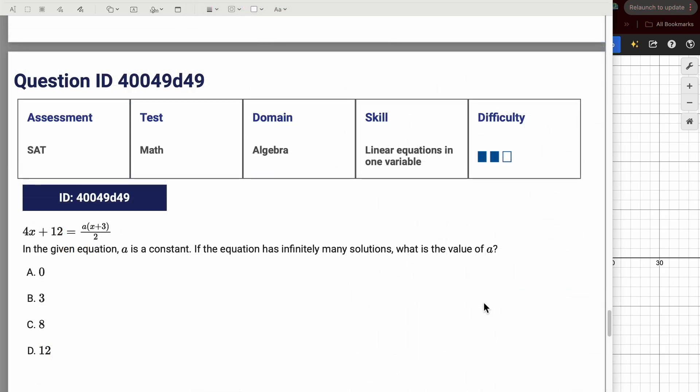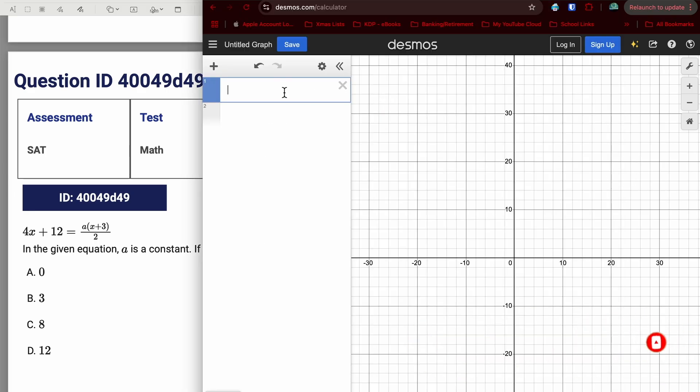Here's another good example of a question you would want to use Desmos for. Again, anytime you see the question and it says, if the equation has infinitely many solutions, what is the value of A? If it has no solutions, what's the value of A? You look at the expression, that's pretty complicated. So as soon as it asks for infinitely many solutions, no solution, definitely think Desmos. So you're going to put that left-hand side of the equation in Desmos. So 4x plus 12.